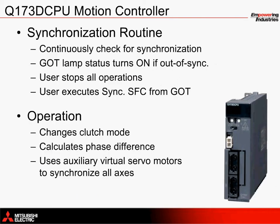The synchronization routine continuously checks the relationship between the master encoder and each of the slave servo axes in the background. If the encoder becomes misaligned with the position of a servo axis, or vice versa, a lamp on the GOT turns on to signal that the system is out of sync.